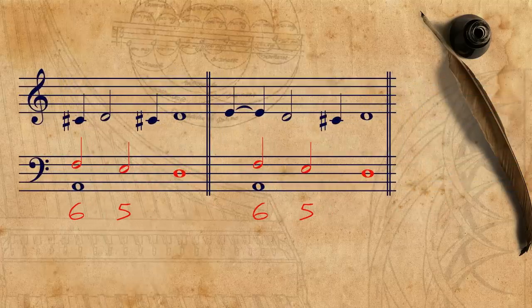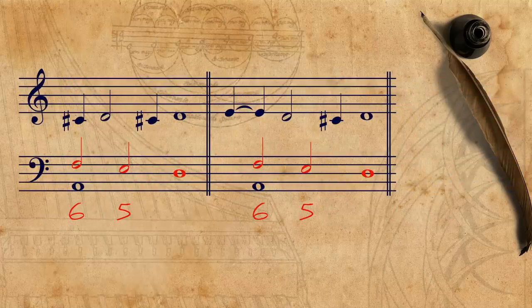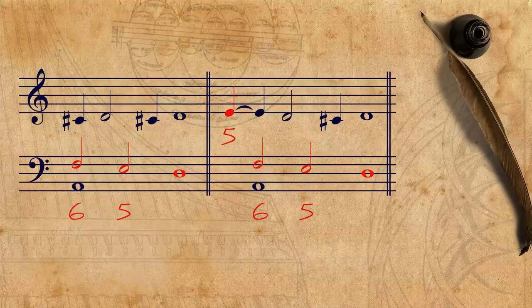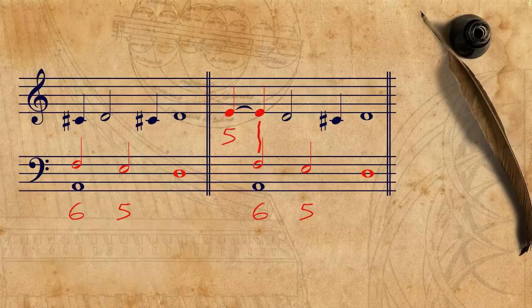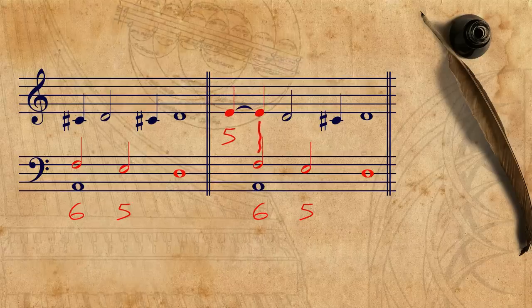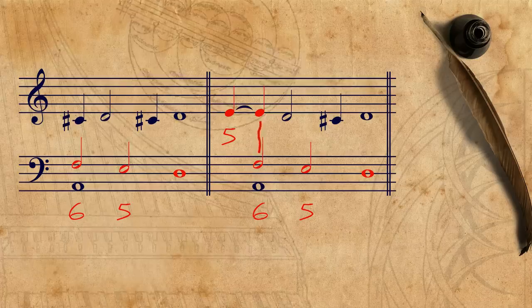A last variant, that for a change also modifies the cantizans, is made with a prepared 5th, that is then used as a dissonance against the 6th of the tenoritzans.